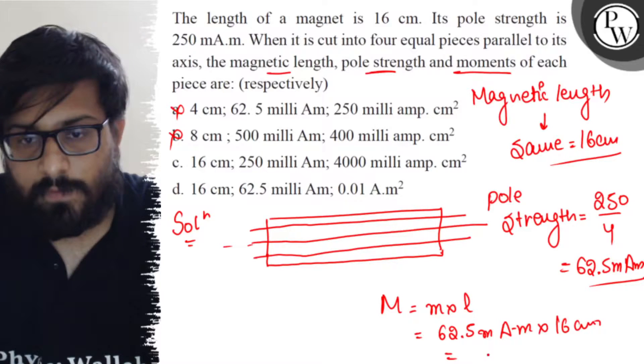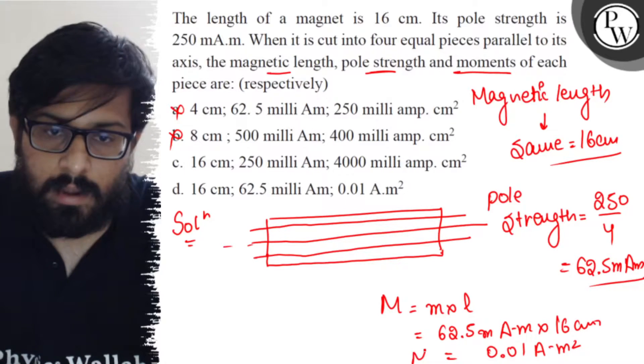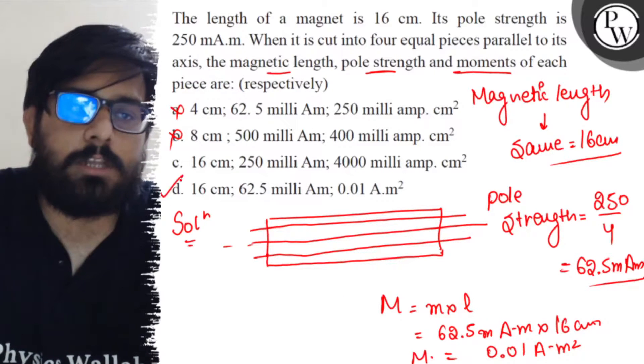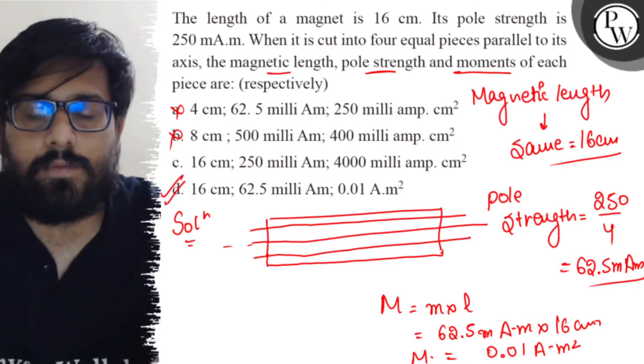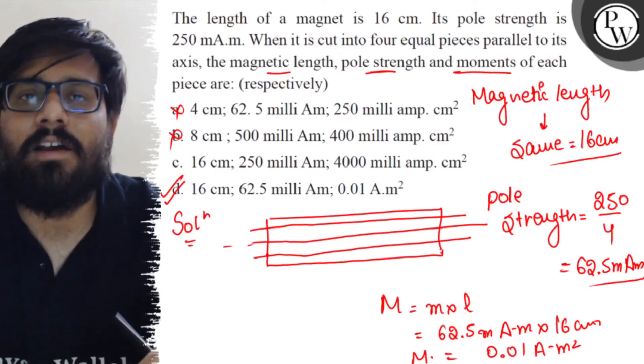which equals 0.01 A·m². Hence, Option D is absolutely correct for this. I hope you got the concept of this question cleared. All the very best!